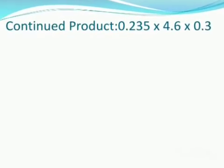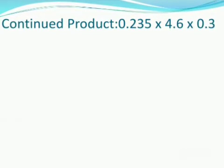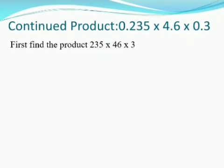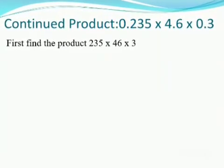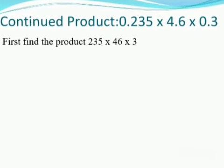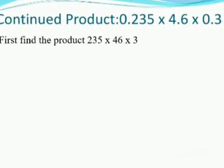Next, continued product: 0.235 multiplied by 4.6 multiplied by 0.3. Same as the previous question, first find the product of these three numbers without decimals. So first we multiply the first two numbers, that is 235 and 46.